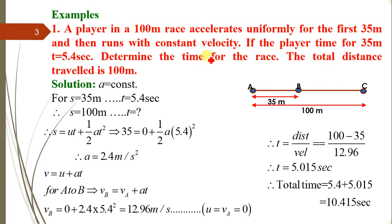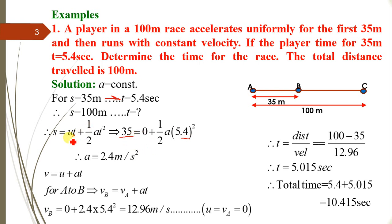Acceleration is constant, s = 35 m, and time = 5.4 s. Since the player starts from rest, initial velocity u = 0. Using the kinematic equation s = ut + ½at²: 35 = 0 + ½ × a × (5.4)². Therefore, acceleration a = 2.4 m/s².